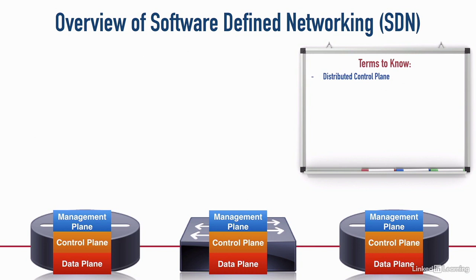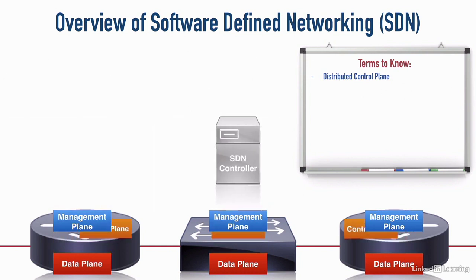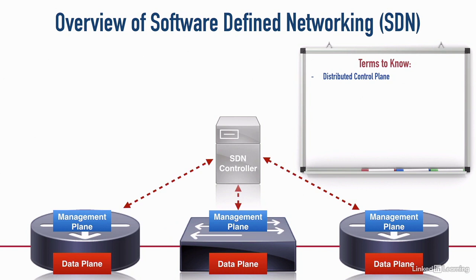With SDN, we often see an SDN controller. This SDN controller lets us consolidate all the control planes on the controller. The controller is running those algorithms; the controller is populating the tables within our devices. This can take the load off of our end devices. The controller is talking to these devices using an API — an Application Programming Interface — which is just one piece of software talking to another piece of software, and we typically draw these devices below the controller.